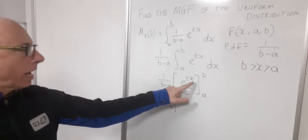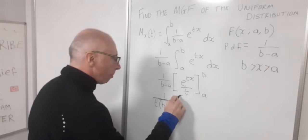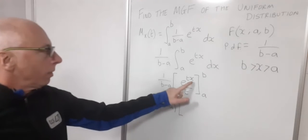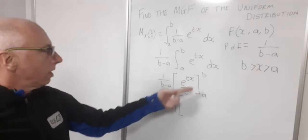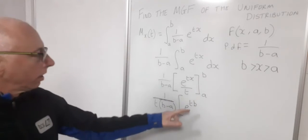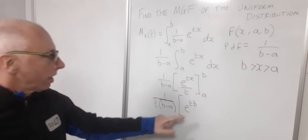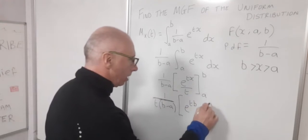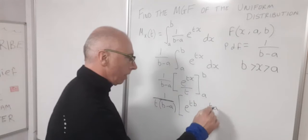And now let's evaluate this at B. So now we'll open a bracket. So where we see X, we plug in a B. So E to the T B. And then we subtract the value when X is A. So that's minus E to the T A.